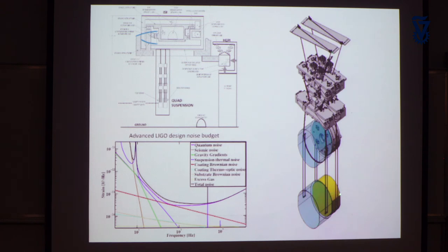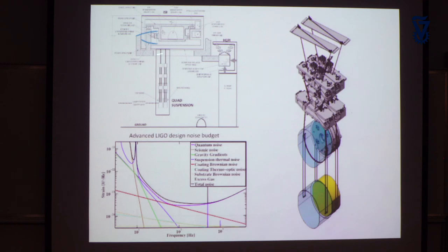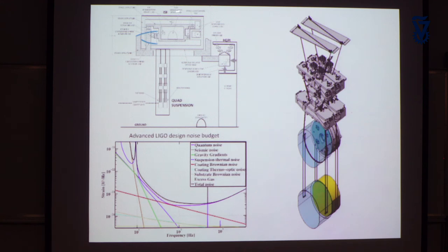The other part is the active vibration isolation — like noise-cancelling headphones. You measure the ground noise with a seismometer, then push on the system to reduce the motion. There are three active vibration isolation systems in series with the passive quadruple pendulum. These together get rid of seismic noise to a level where it doesn't matter, as shown in the advanced detector noise curve.